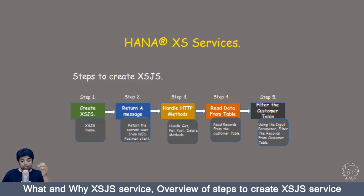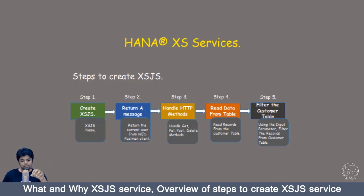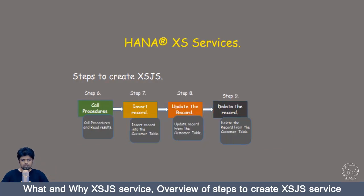In Step 4, I am going to read the records from the customers table and return the results to the user. In Step 5, I am going to use input parameters from the user and apply them in our XS JS service to filter the records.